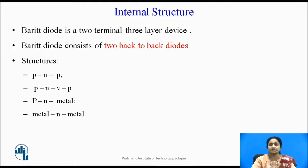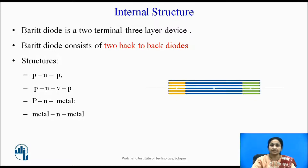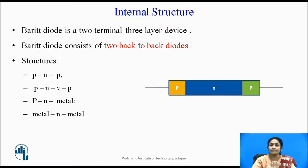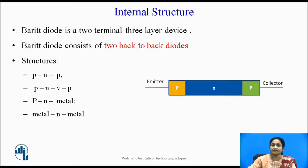Looking at the internal structure of the BARITT diode, it has two terminals and is a three-layered device. There is one junction between P-type and N-type material, and another between P-type and N-type — that is why it is known as consisting of two back-to-back diodes. The two terminals are named emitter and collector. Various structures are available: P⁺NP⁺, P⁺Nν, P-metal, or metal-metal.